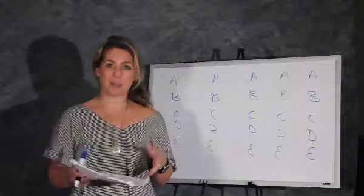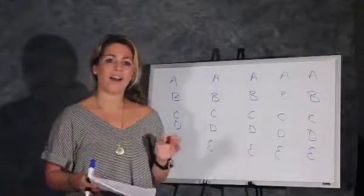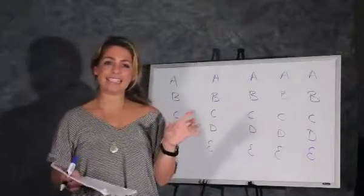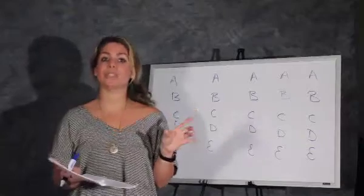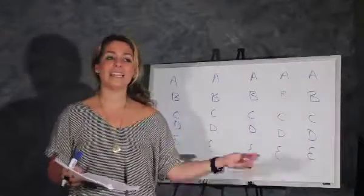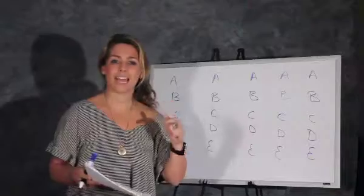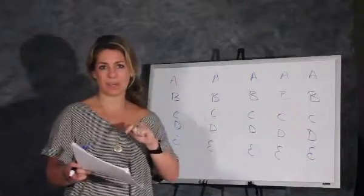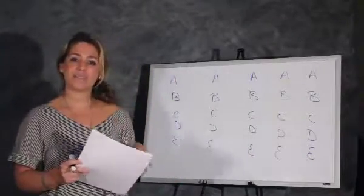Basically, what dangling modifiers refer to is when you start a sentence with a clause that has no subject. What needs to happen is that the subject has to come immediately after the comma. So now let's look at that first example.